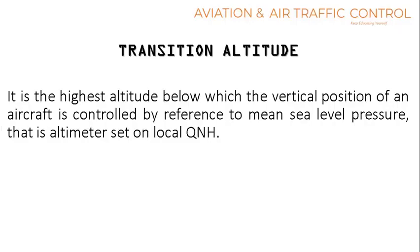Transition altitude is the highest altitude below which the vertical position of an aircraft is controlled by reference to mean sea level pressure — that is, the altimeter is set on local QNH. Here the concern is obstacles in and around the airport during climb and descent phases. All obstacles are represented on charts as elevation, and for elevation the reference is mean sea level.